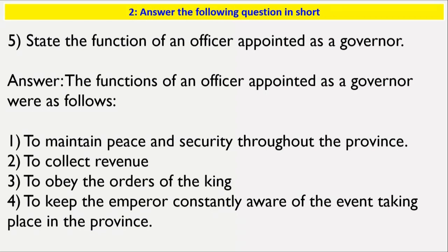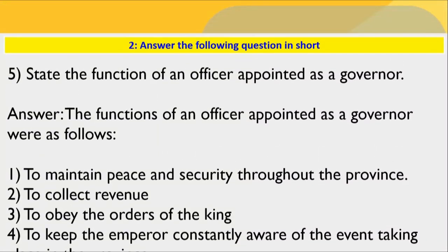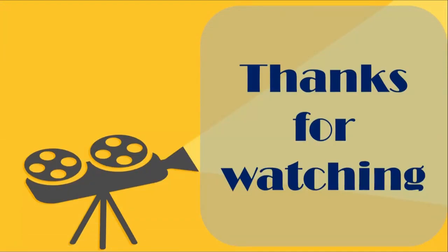Question: State the functions of an officer appointed as governor. The functions of an officer appointed as governor were: to maintain peace and security throughout the province; to collect revenue; to obey the orders of the king; and to keep the emperor constantly aware of events taking place in the province.